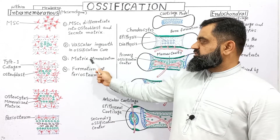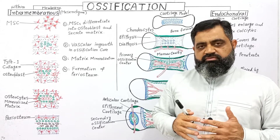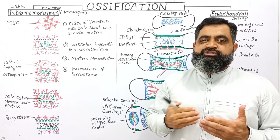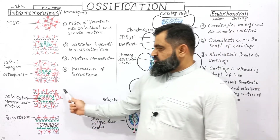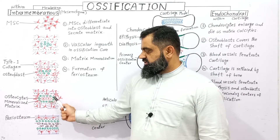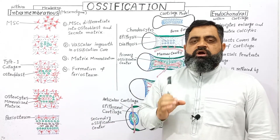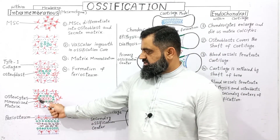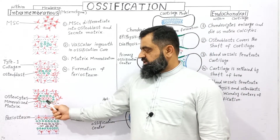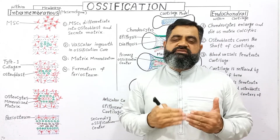In the next step, matrix mineralization takes place. Minerals are provided by blood capillaries and bone cells are formed. Osteoblasts convert into osteocytes, which form bone. In the diagram you can see blood vessels and stem cells. In the center, shown in green, osteoblasts are developing into osteocytes. Around the osteocytes there is a mineralized matrix, and the process of bone formation has begun.